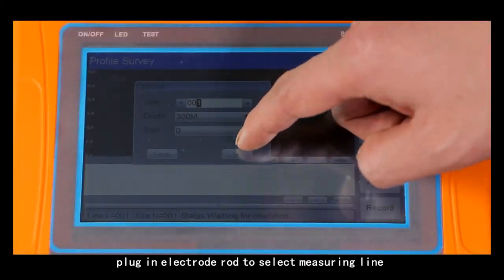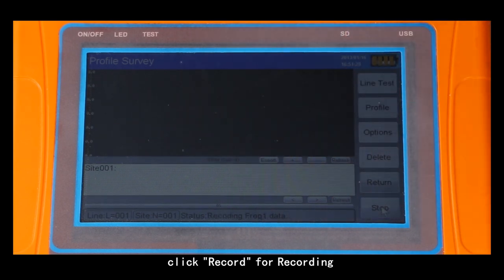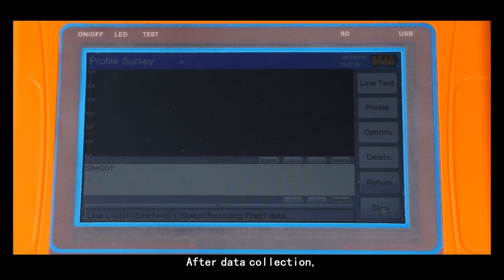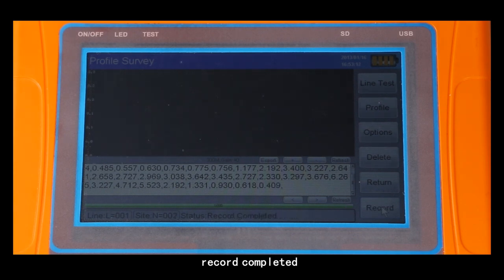Plug in electrode rod to select the measuring line. Click record for recording. After data collection, the instrument display screen will show record completed with a reminder sound.